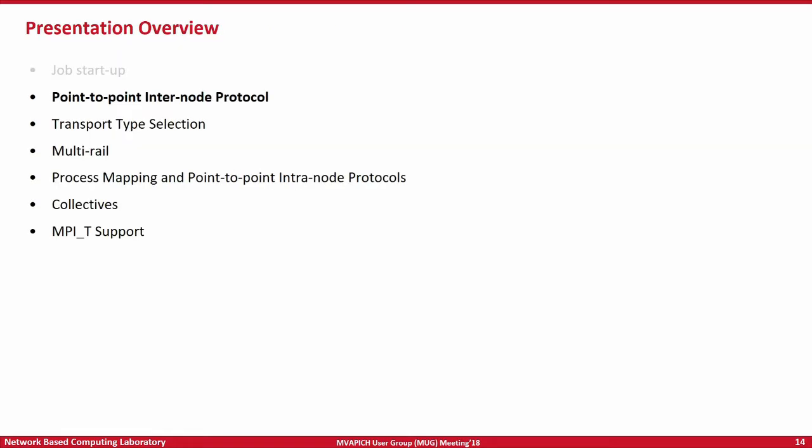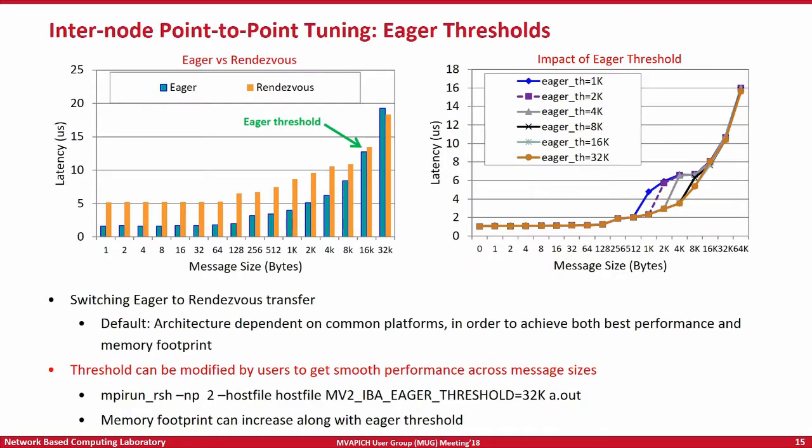So that's as far as job launch goes. Once your job is launched, what next? You have your communication operations. How do you ensure your communication operations — your point-to-point, collectives, intranode, internode — work fine? What are the options that MVAPICH2 provides with regard to that? That's what we'll look at next.